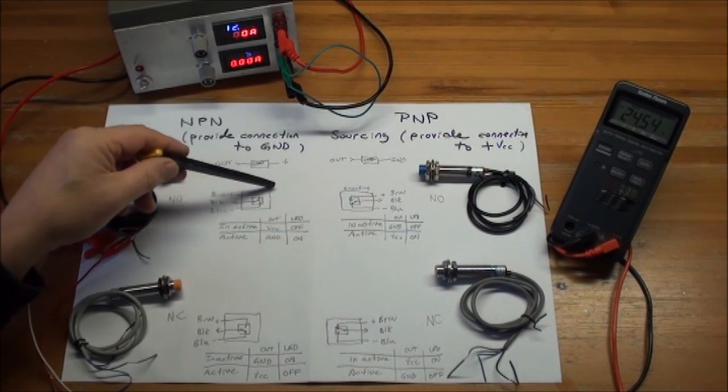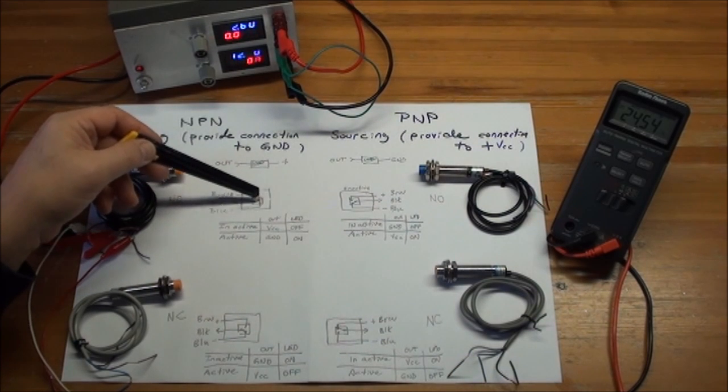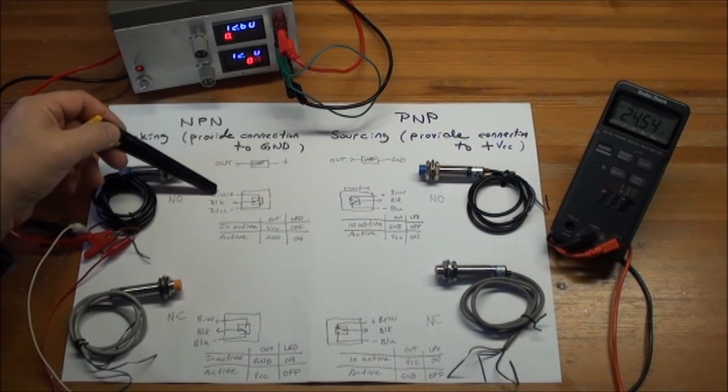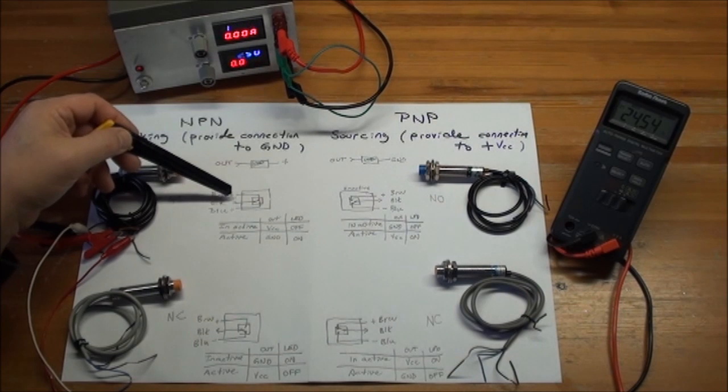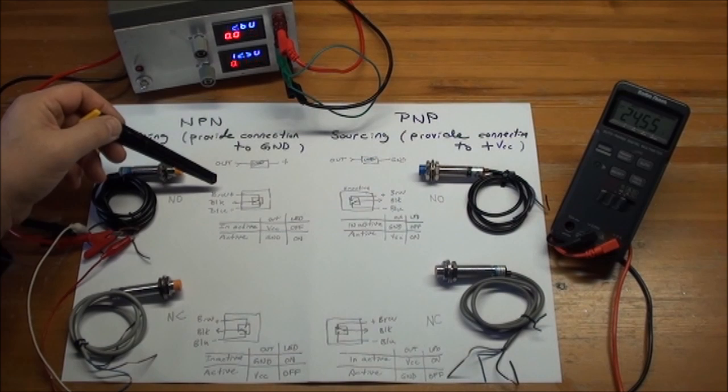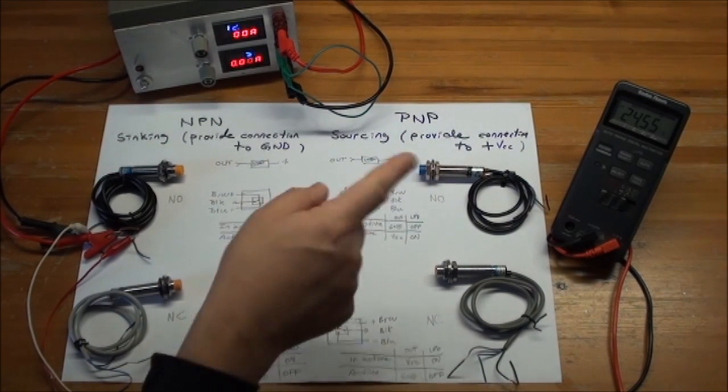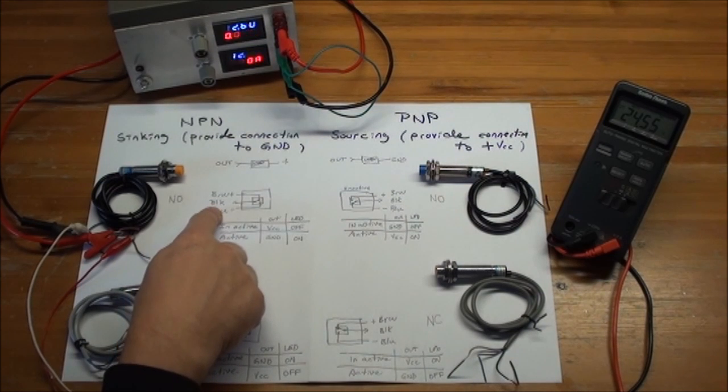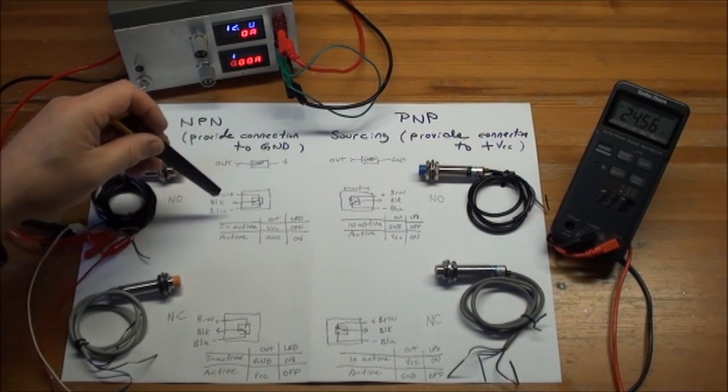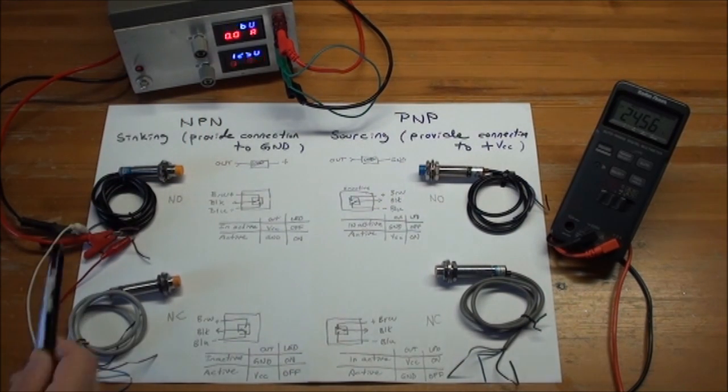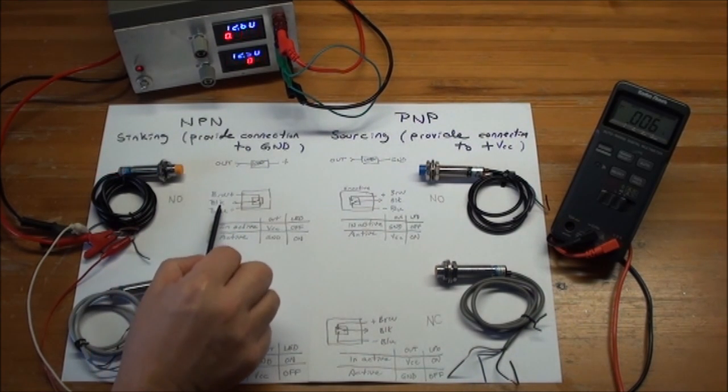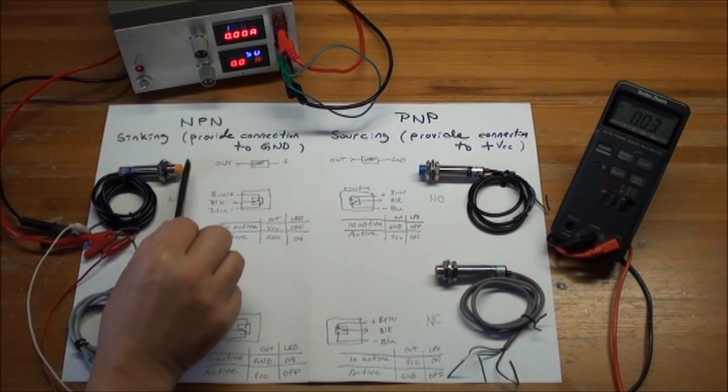If you look inside, you can envision it as a switch that goes up and down between the different wires. You have the brown being plus, the black being the out, and the blue being the minus. And in the state that it is right now, you have the 24 volts coming out of the black. So you can envision that you have a connection from brown coming out of black. Then when activated, the switch goes down and you get zero, which is the same as you have a connection to ground. So that's how this one is working.